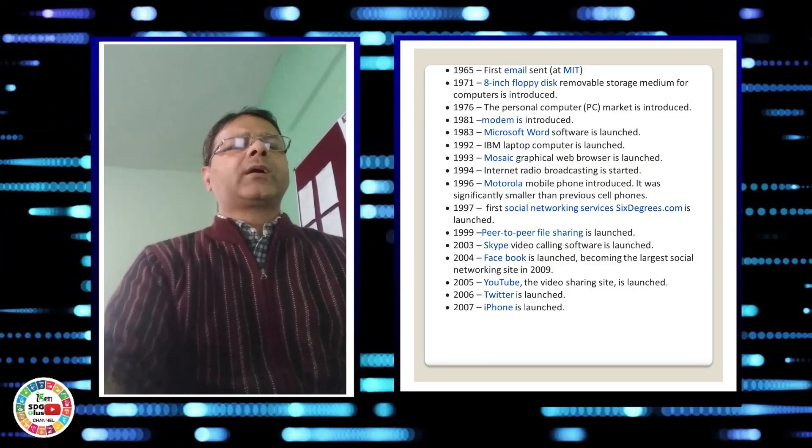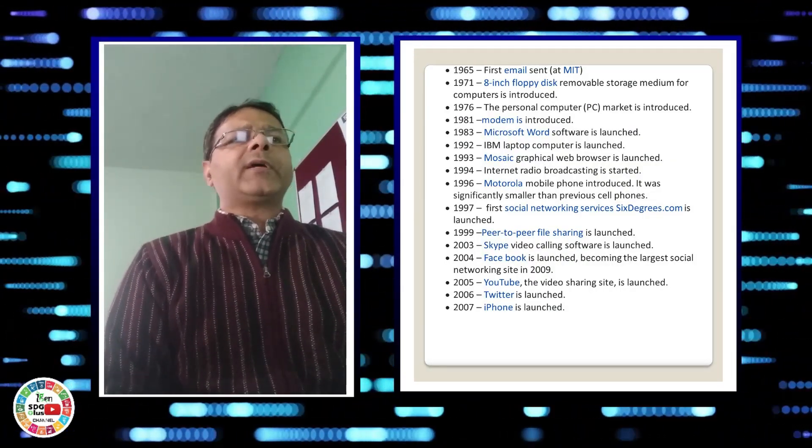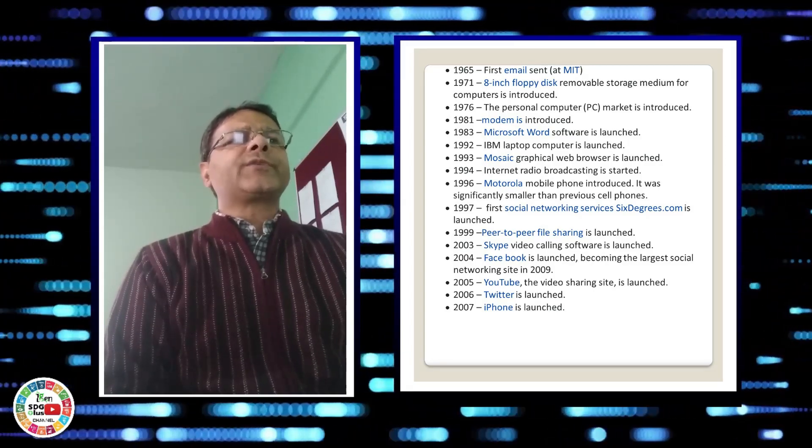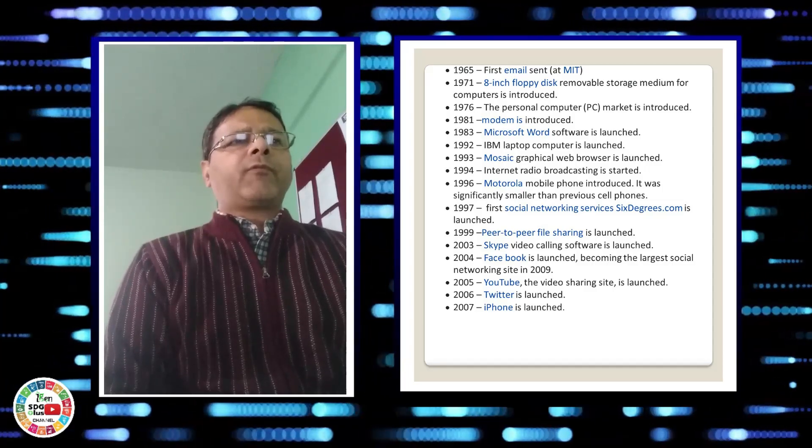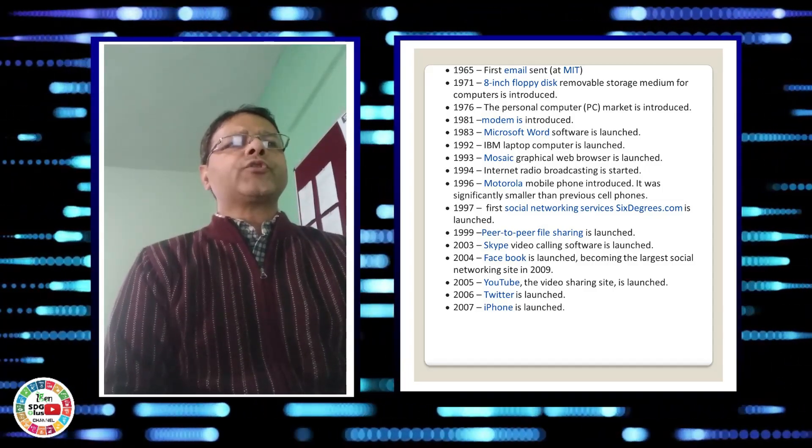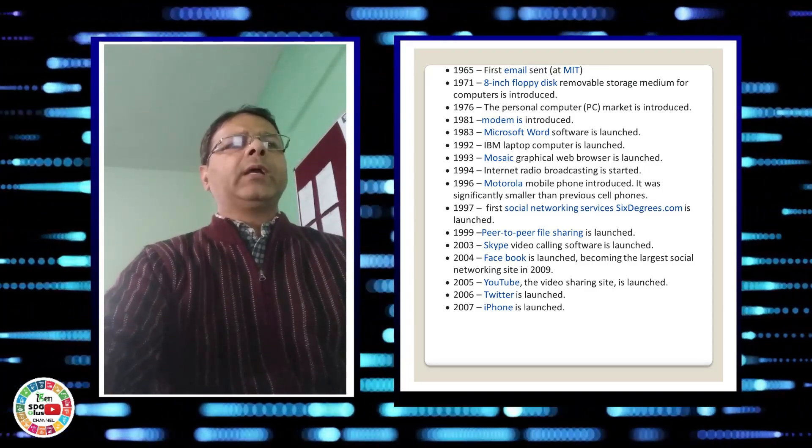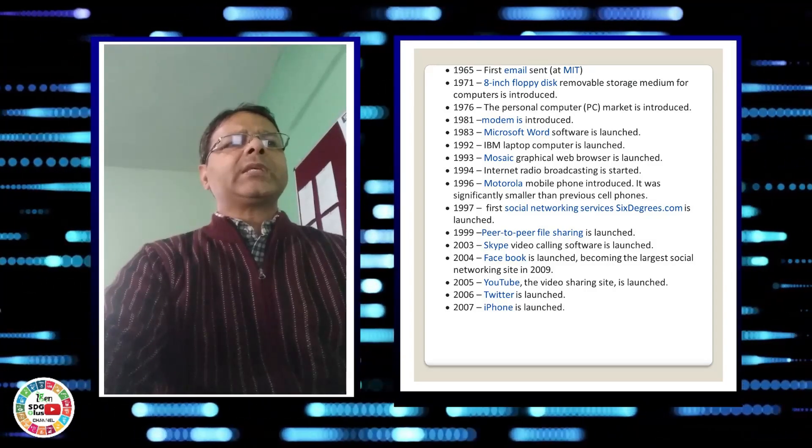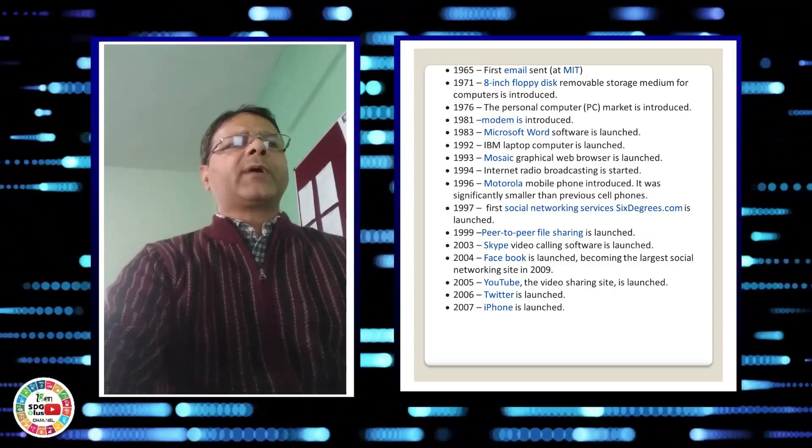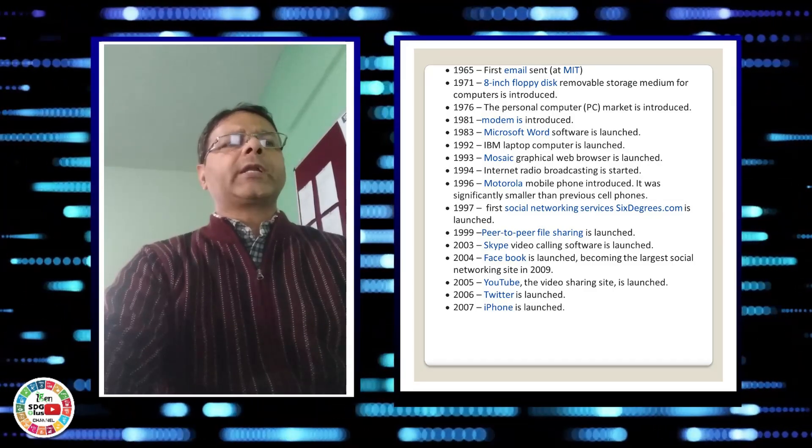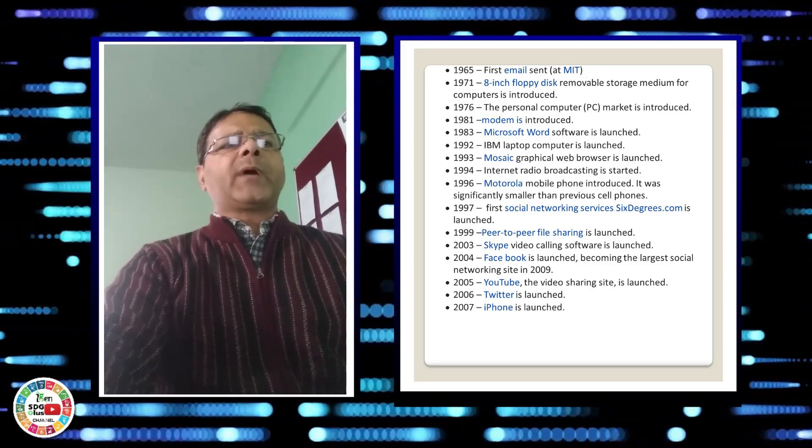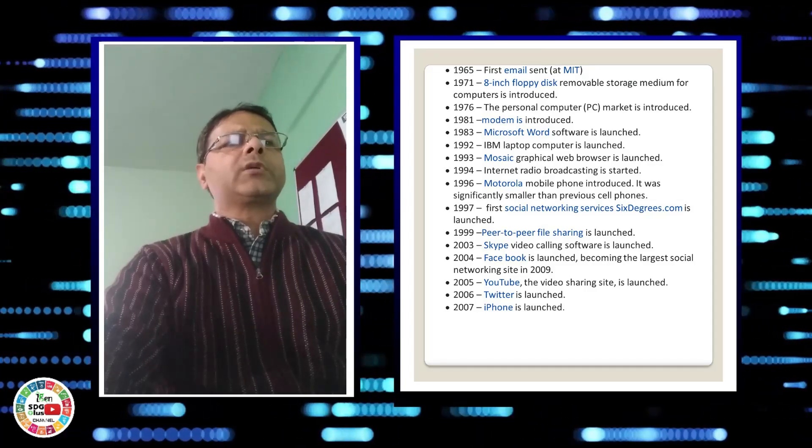Next comes computers and internet. Here are some facts about computers and the internet. The first email was sent in 1965. The first floppy disk was introduced in the year 1971, and the first PC, that is the personal computer, was introduced in the year 1976.